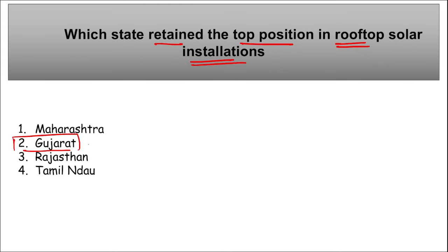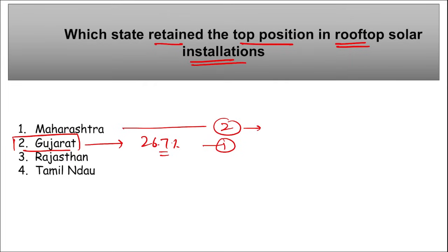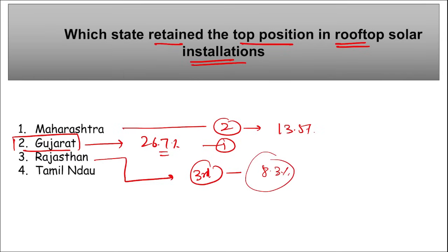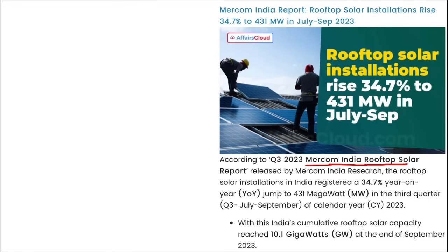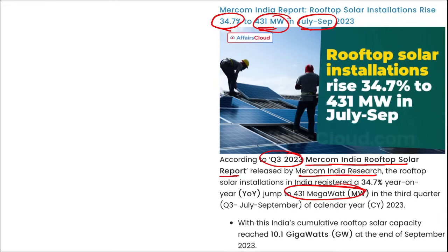यह data Mercom India की rooftop solar report में था, released by Mercom India Research — यह Q3 report थी July से September के बीच। Rooftop solar installation में 34.7% increase देखने को मिला, to 431 Megawatt। India की cumulative rooftop solar capacity reached 10.1 Gigawatt at the end of September 2023।